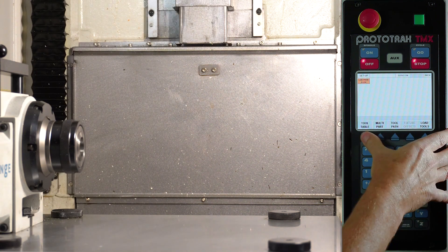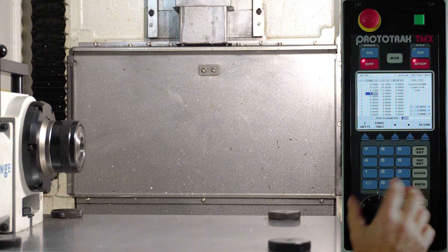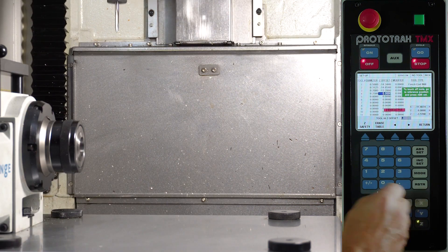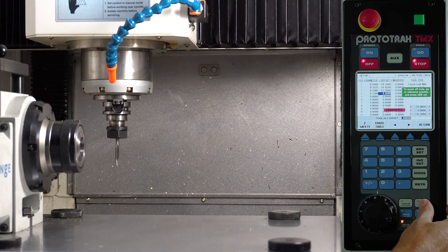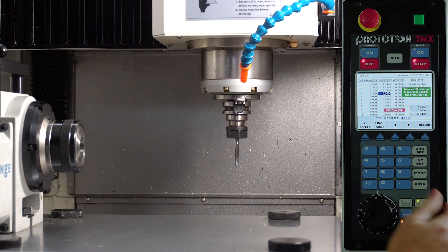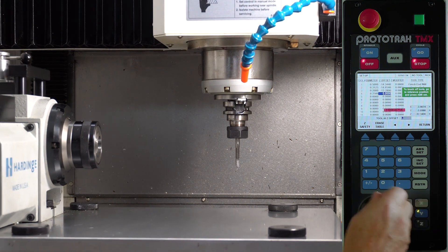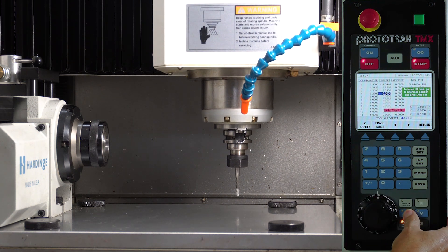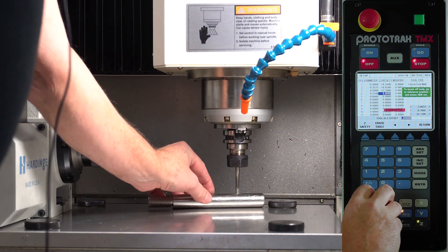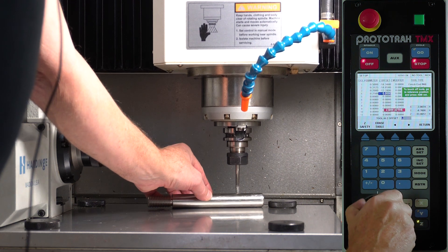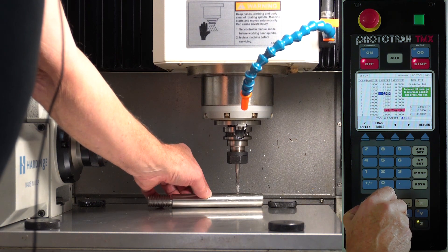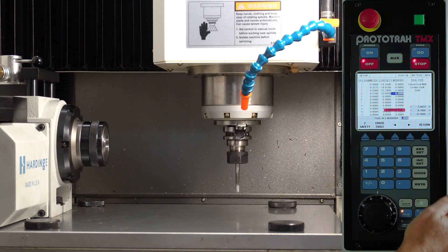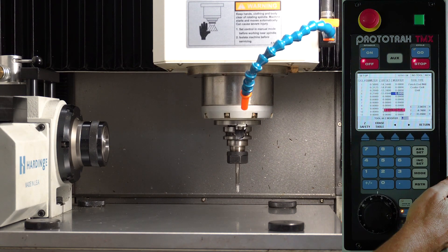One last tool. Back to my tool table, down to tool number four, over for the offset—same process. There we go, hit the set key. So you see all four of my offsets are in here now.